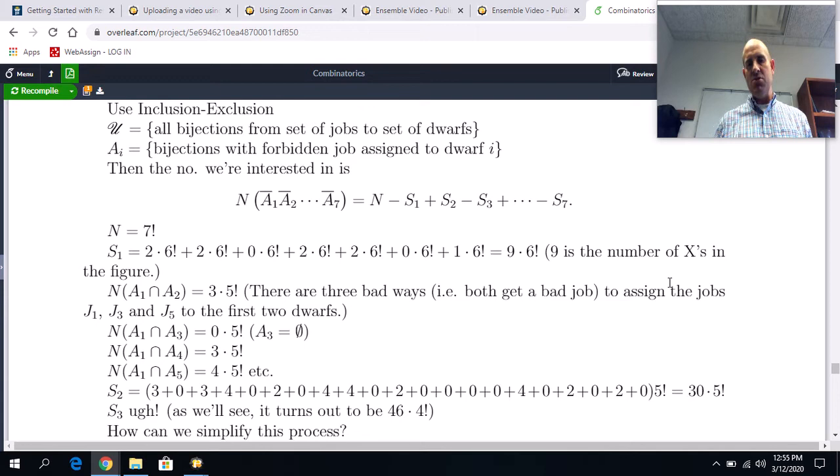We don't want to be in A_1, we don't want to be in A_2, and we don't want to be in any of those sets, all the way up to A_7. And means it's intersection. So we just apply the formula for inclusion-exclusion. That's just going to be N, which is the book's notation for the size of the universe, minus S_1, plus S_2, minus S_3, plus dot dot dot, all the way down to minus S_7.